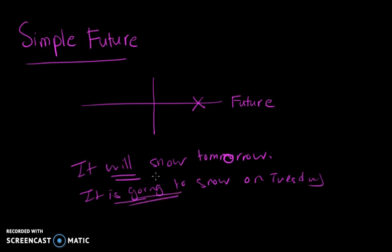So in this case, for example, the first sentence, it will snow tomorrow, this is an event that will happen at one particular time in the future.